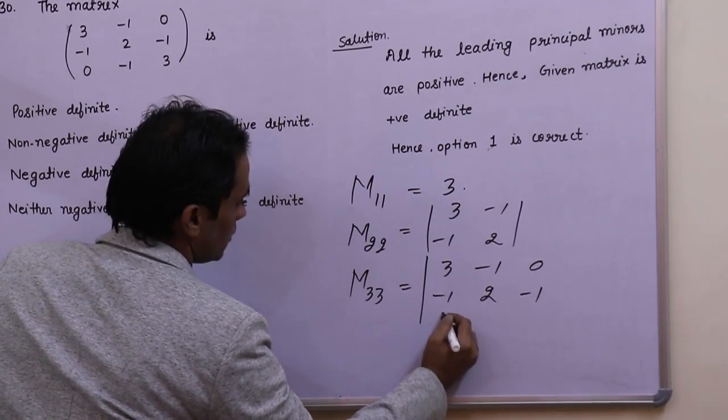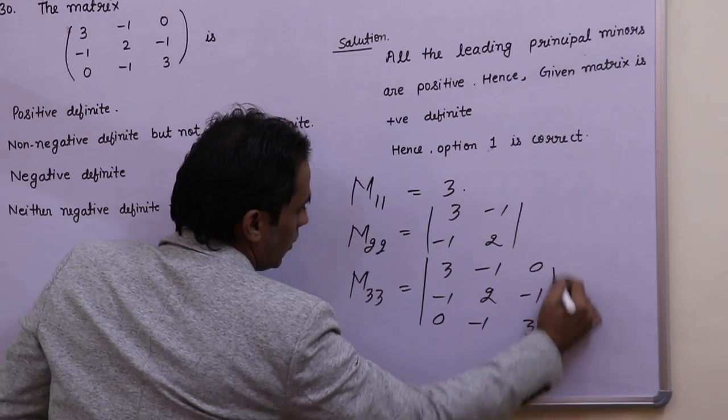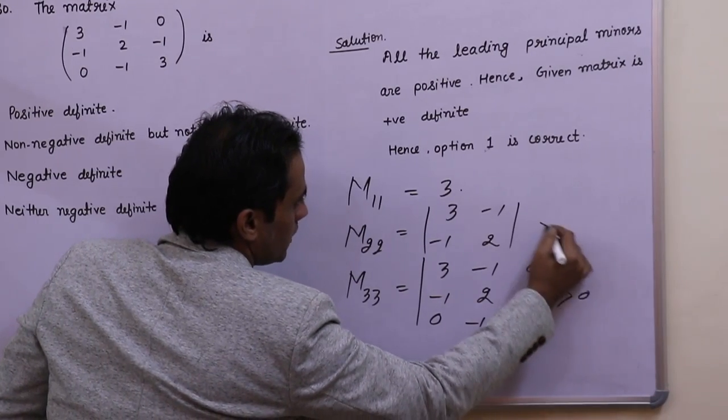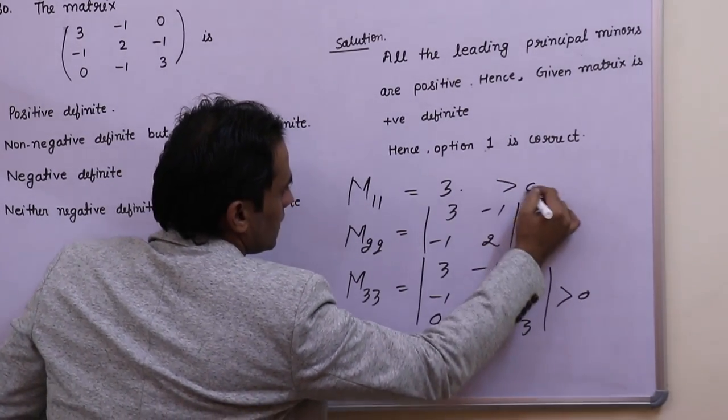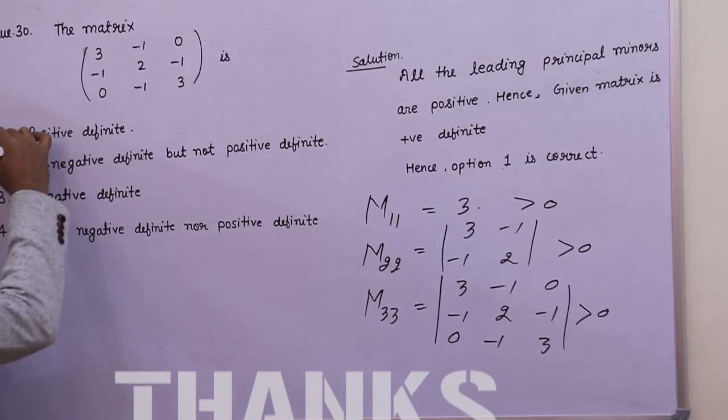All these three are positive, hence the given matrix is positive definite. The answer is option 1.